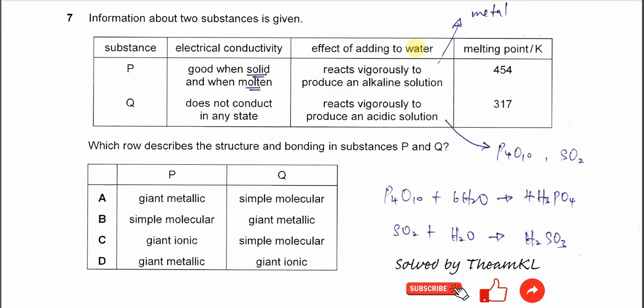Effects of adding to water: reacts vigorously to produce alkaline solution. This is telling us it's most likely a group one metal like sodium and potassium, which react to produce sodium hydroxide and potassium hydroxide solution.